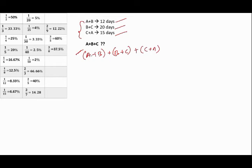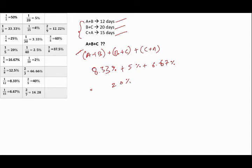A+B doing work in 12 days means 8.33% of work per day. 20 days means 5%. 15 days is again 6.67% per day. Add them up: 8.33 + 5 + 6.67 = 20% of work. But notice that when you add (A+B) + (B+C) + (C+A), you actually have 2A + 2B + 2C.